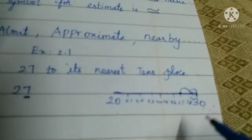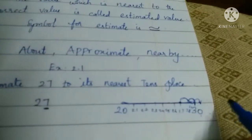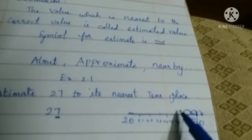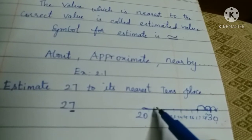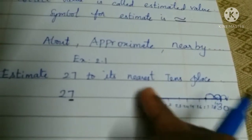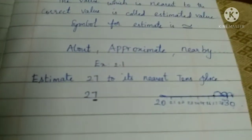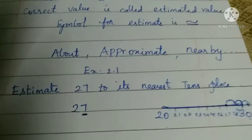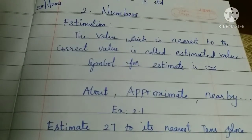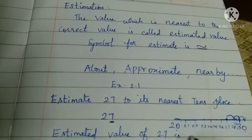From 27 to 30, it is just 3 steps forward. But to go back to 20, you have to go backward 7 steps. Since 30 is only 3 steps away and 20 is 7 steps away, 30 is nearer. So the approximate value of 27 is 30. The estimated value of 27 is 30.